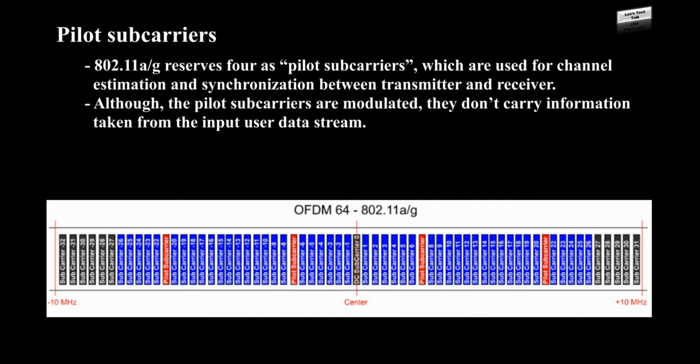Pilot subcarriers: 802.11a or 802.11g reserves four pilot subcarriers, which are used for channel estimation and synchronization between transmitter and receiver. Although the pilot subcarriers are modulated, they don't carry information taken from the input user data stream.